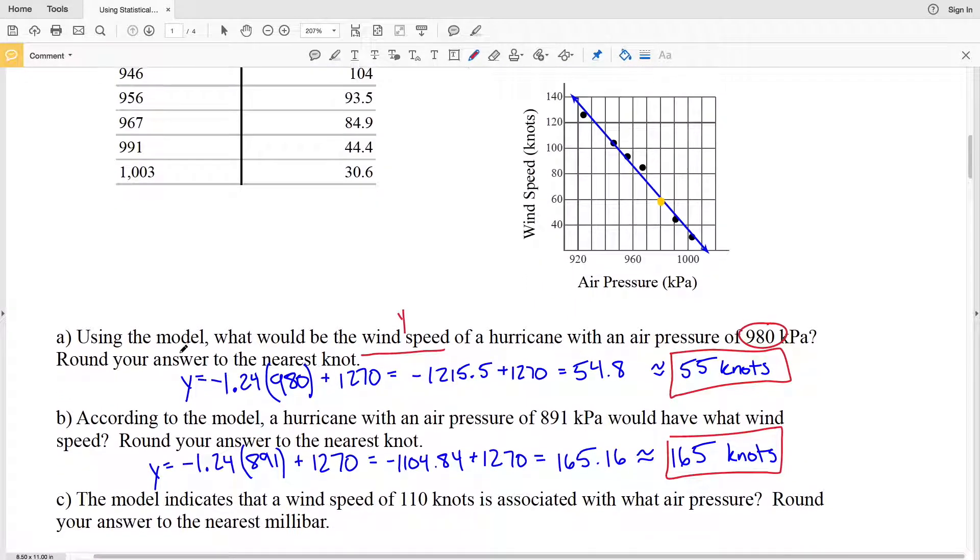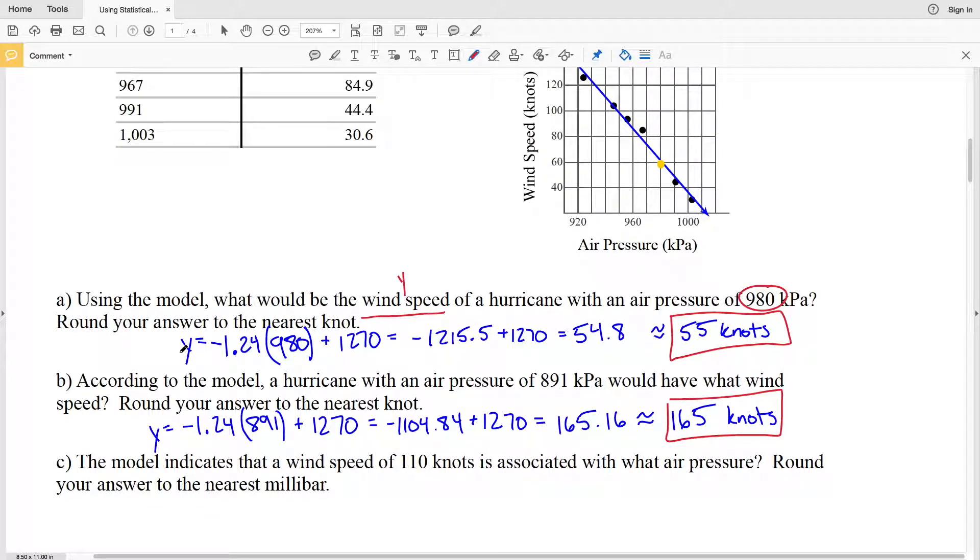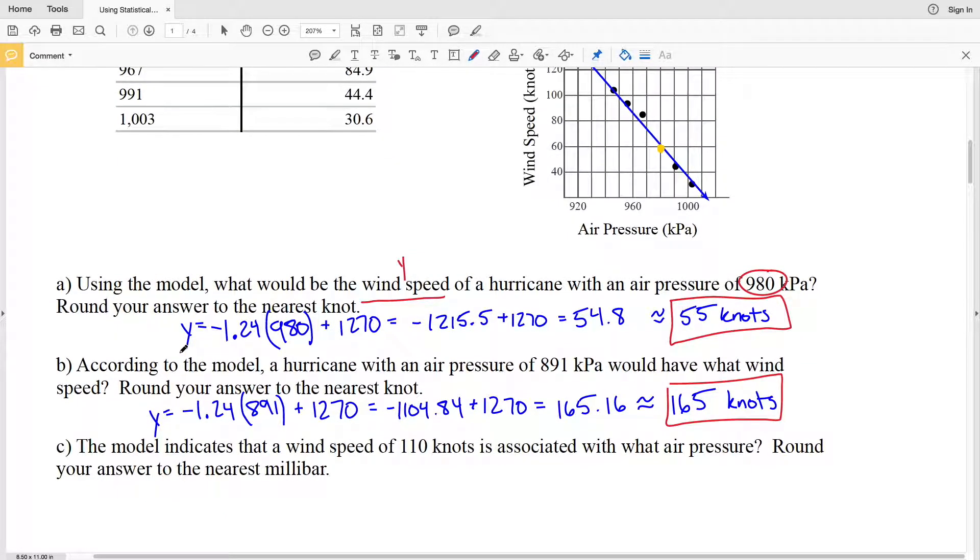Lastly, associated with this model, we're going to answer part C. It says that the model indicates that a wind speed of 110 knots is associated with what air pressure. Now since we're given the wind speed, that's our Y value, we need to solve for X.